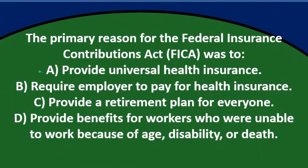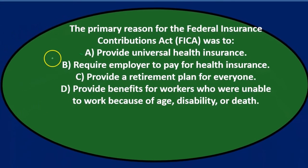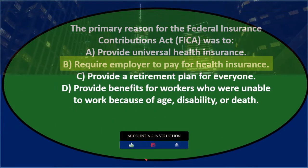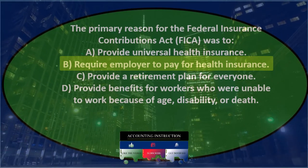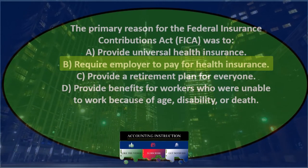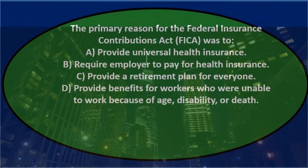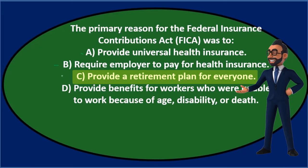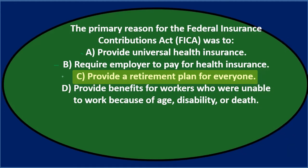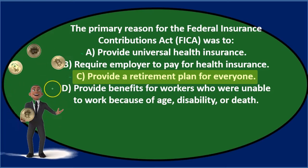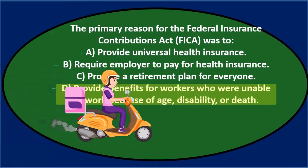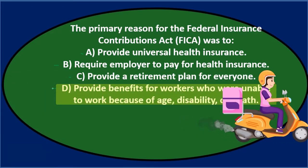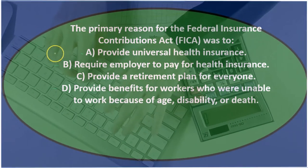Medicare is part of FICA and is kind of universal in a way, so let's keep A as a possible best answer. B) require employer to pay for health insurance — you could think, well Medicare is being paid for and there's an employee and employer portion, so I'll keep that for now. C) provide a retirement plan for everyone — Social Security is the other component, and you can think of it like a retirement plan, but it's really a safety net. D) provide benefits for workers who were unable to work because of age, disability, or death — that seems the most reasonable.